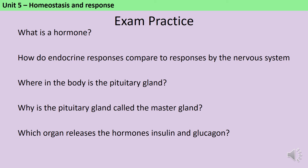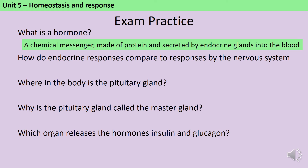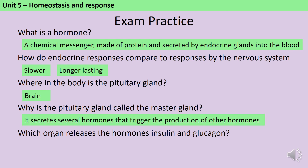Let's pause here and see how much of that you've taken on board. Hormones are chemical messengers. They're made out of protein, and they're secreted by endocrine glands into the bloodstream. The responses of the endocrine system are much slower than those of the nervous system, but also longer lasting. The pituitary gland is in the brain, and it's called the master gland because it secretes several hormones that trigger the production of other hormones further downstream. The pancreas is responsible for secreting insulin and glucagon.